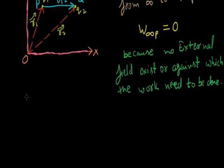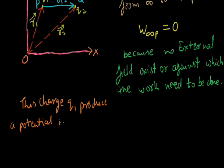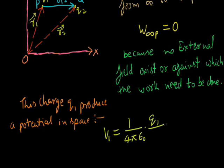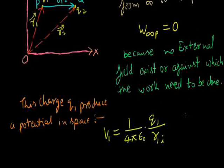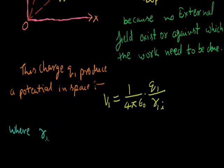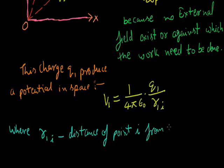Now the Q1 charge is existing and it is creating a field, and due to which there would be a potential. This charge Q1 produces a potential in space. That potential is V1, and that will be equal to 1 upon 4π epsilon_0 into Q1 upon r1i, where r1i is distance of point from Q1.